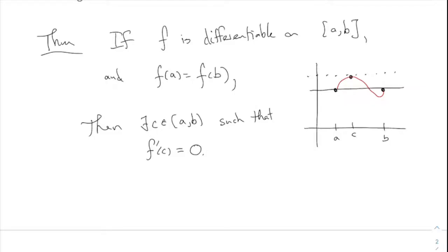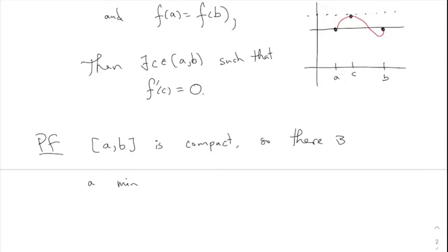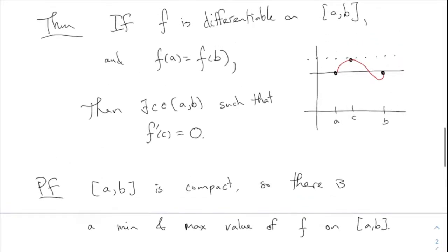Here is why Rolle's theorem is true. The closed interval is the domain — it's a compact set. So there is a minimum and a maximum value of F on the closed interval A to B. That almost does it completely. What does that have to do with finding a point where the derivative is zero?